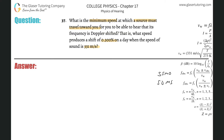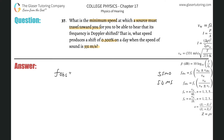The problem says the source is traveling toward you, so the source is moving — meaning I'm going to use my SOMS formula. The frequency of the observer equals the frequency of the source multiplied by the velocity of sound divided by the velocity of sound plus or minus the velocity of the source. Since the source is moving toward you, we use the negative sign.